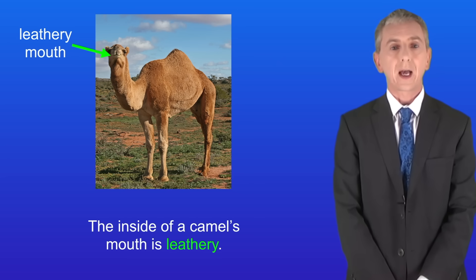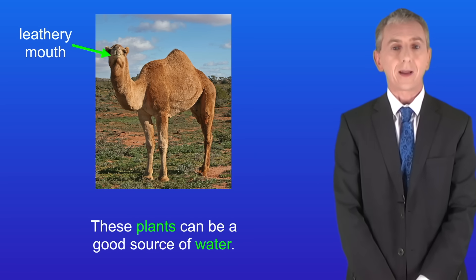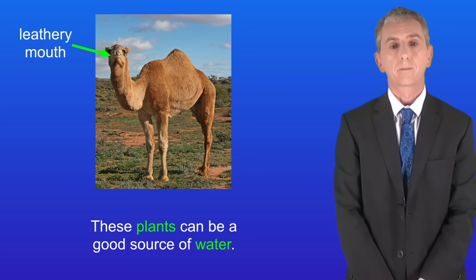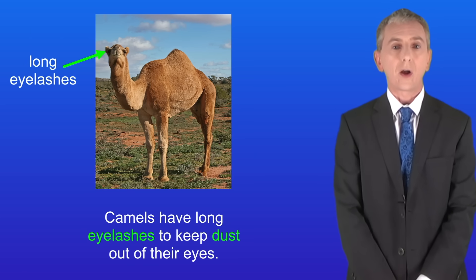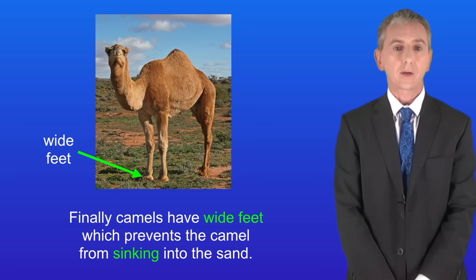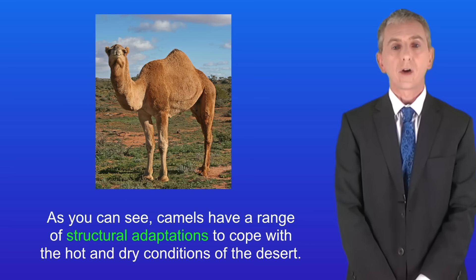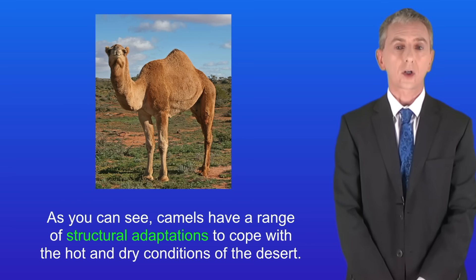The inside of a camel's mouth is leathery, which means that they can chew desert plants which often have thorns, and these plants can be a good source of water. Camels also have long eyelashes to keep dust out of their eyes. They can also close their nostrils to keep dust out of their nose. And finally, camels have wide feet which prevents the camel from sinking into the sand. So camels have a range of structural adaptations to cope with the hot and dry conditions of the desert.